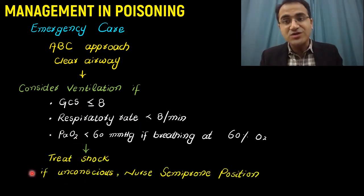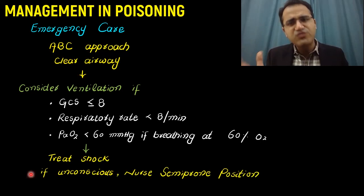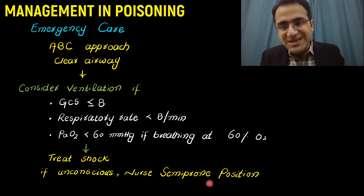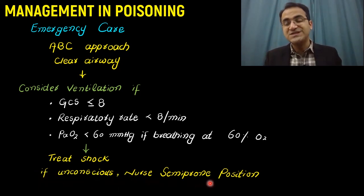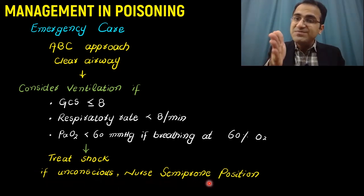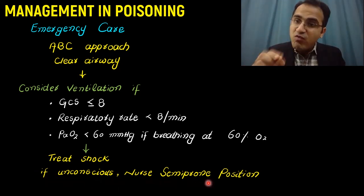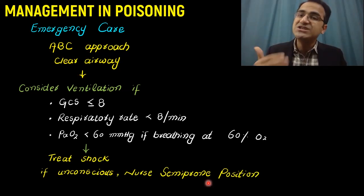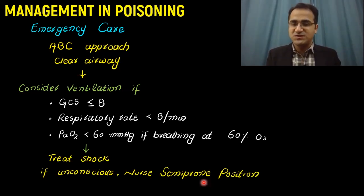If the patient is in shock, treat it with fluid resuscitation and give inotropes if needed. If the patient is unconscious, nurse the patient in the semi-prone position, since these patients are at risk of aspiration — keep them semi-prone to avoid aspiration of the poison and regurgitation.